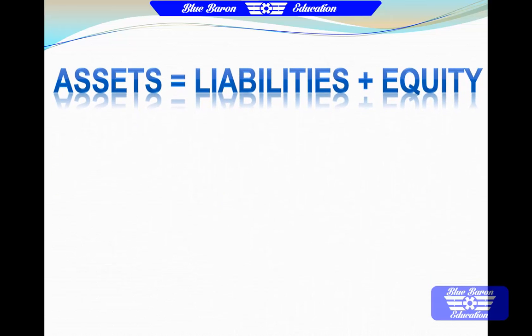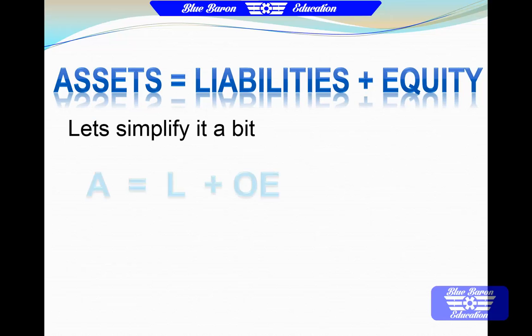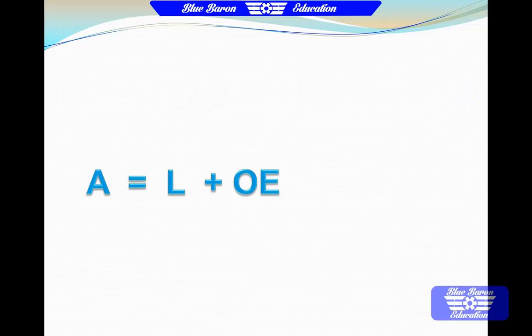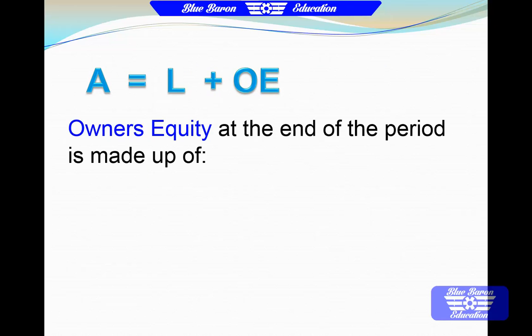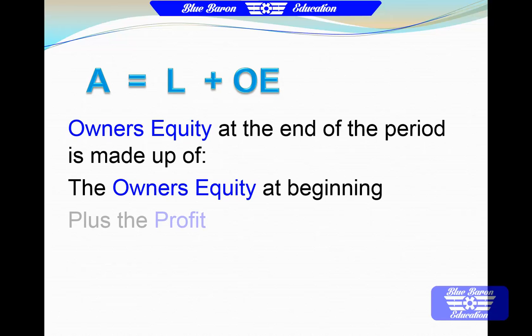First of all let's simplify this a little bit. Assets equal our liabilities plus our owner's equity — A equals L plus OE. Owner's equity at the end of the period is made up of our beginning owner's equity plus any profit, less any drawings.